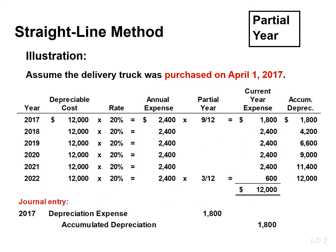Depreciation expense is the same amount, $2,400, for the next 4 years. The depreciation expense in the last year would be $600, found by taking the annual depreciation of $2,400 and multiplying that by 3/12.